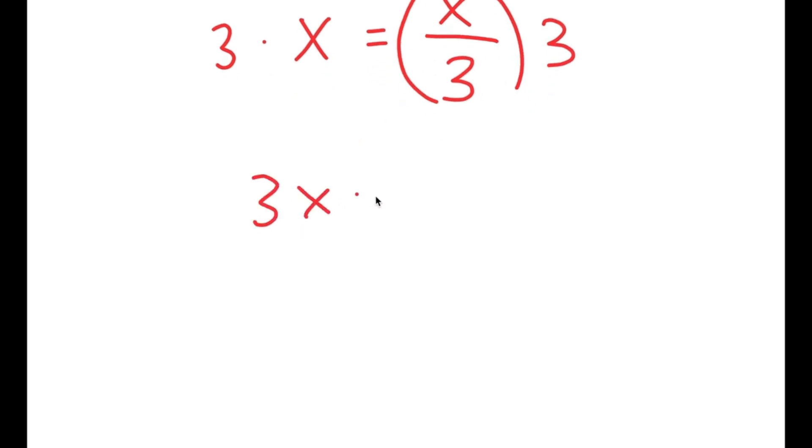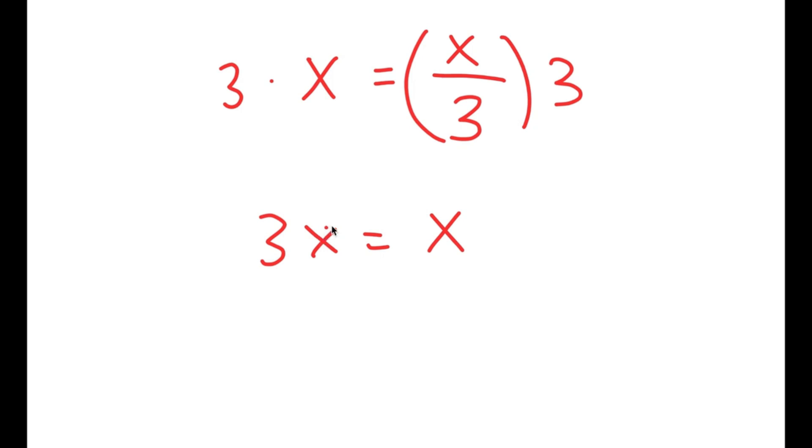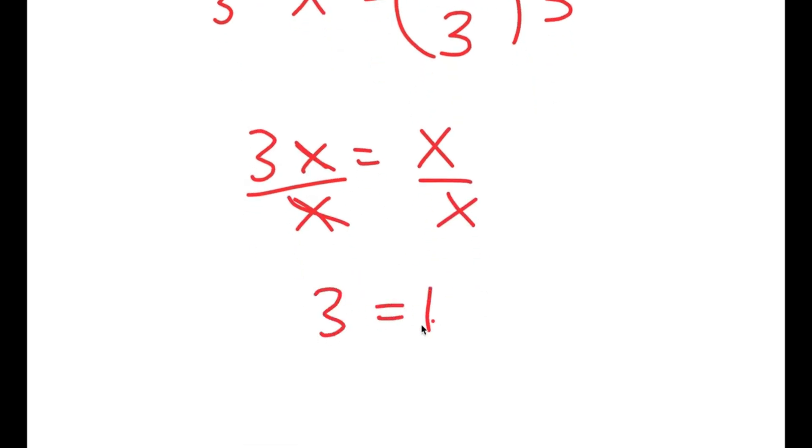So I get 3x is equal to x. And from here, what most people would do is divide both sides by x. But if you do this, you get 3 equals 1, which is an incorrect statement.